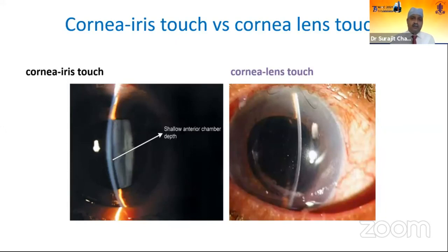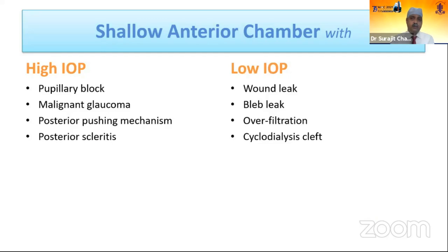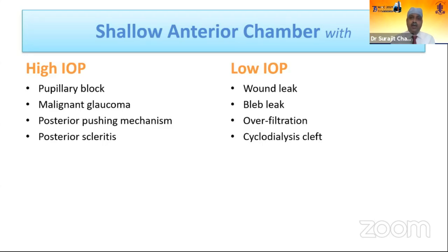Grade 3 is where lenticular-corneal touch is present. This is the picture we don't want to see — that's why we modify so many surgical techniques. Still, it happens because we balance between a leaking and non-leaking form. Looking at the causes of shallow anterior chamber, it can be associated with not only low IOP but also high IOP. The high IOP causes include pupillary block, malignant glaucoma, and posterior pushing mechanisms like posterior scleritis.